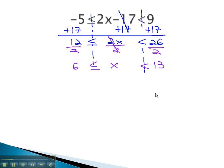With these tripartite inequalities, once we've isolated the variable, it should be quite simple to graph the result, because what we're saying is the x is between the number 6 and 13.